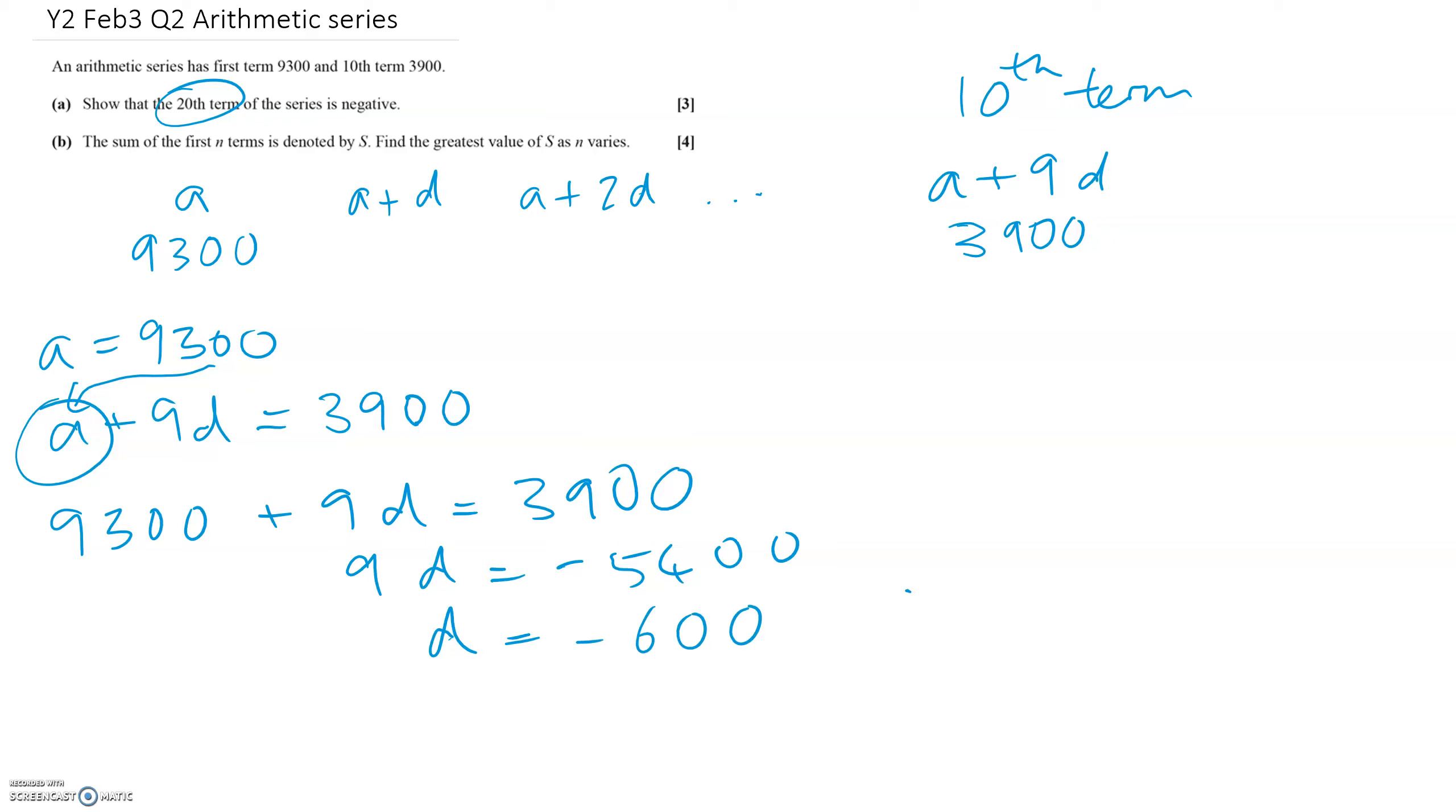So 3900 minus 9300, that's minus 5400. And divide that by 9 and that's minus 600. So therefore the difference each time is minus 600.